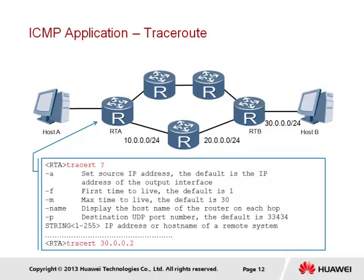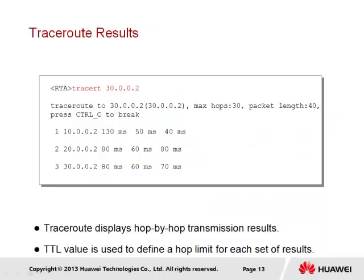We demonstrate the traceroute application based on the diagram shown, in which the path between host A and host B is determined where multiple paths may exist. Host B has the destination address of 30.0.0.2. As the TTL value expires, results are returned to the source showing the hop reached and the round-trip time on three separate occasions. The traceroute application is a valuable troubleshooting tool — it can determine that a destination is unreachable, pinpoint the hop at which connectivity is lost, and identify issues such as routing loops.